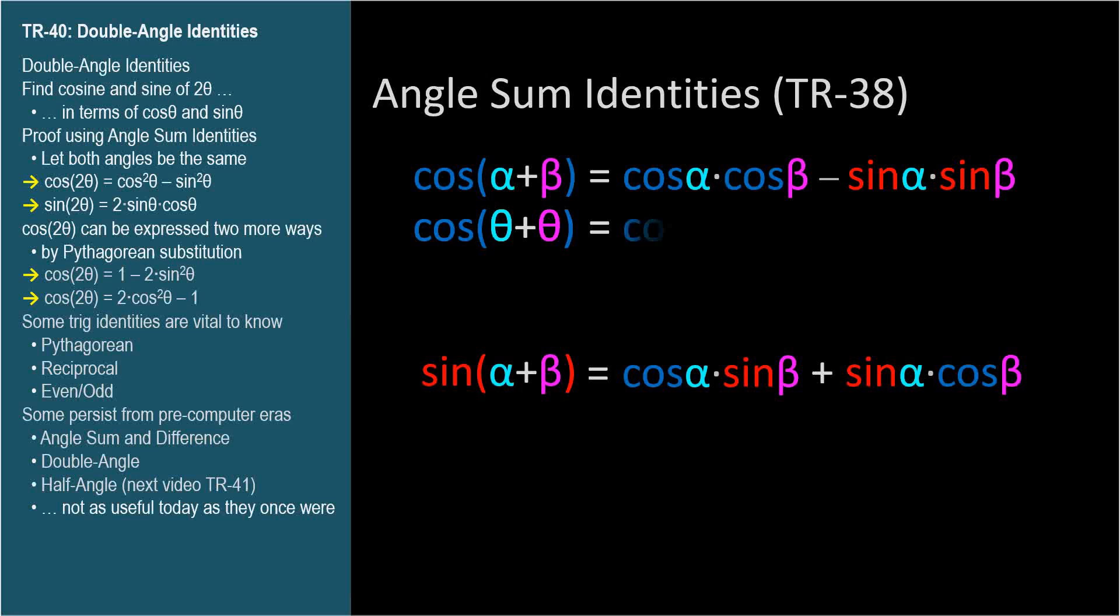Cosine θ plus θ equals cosine θ times cosine θ minus sine θ times sine θ. This is cosine squared θ minus sine squared θ.